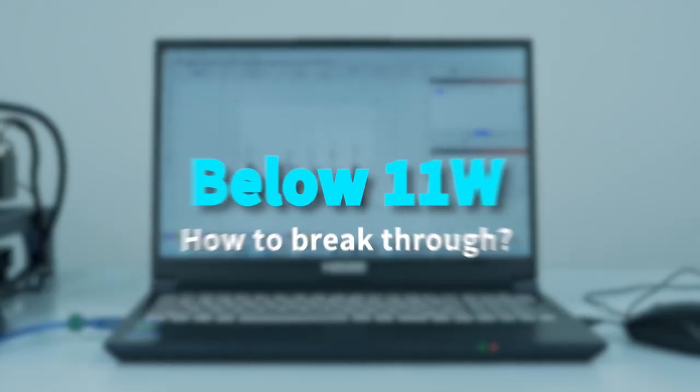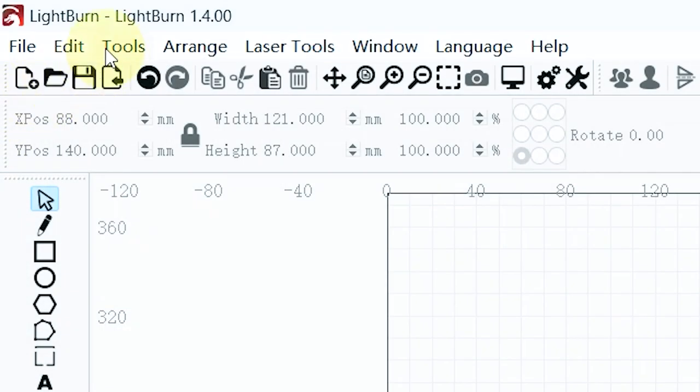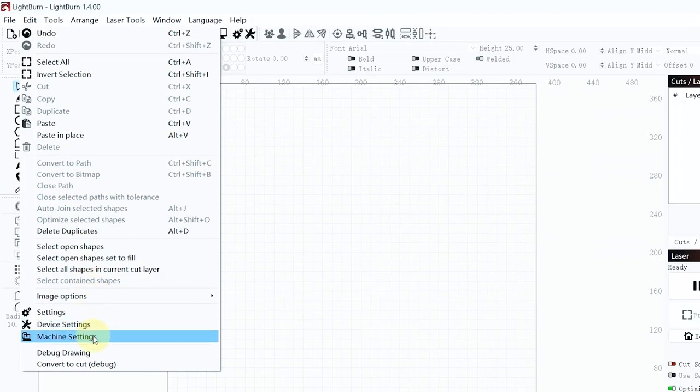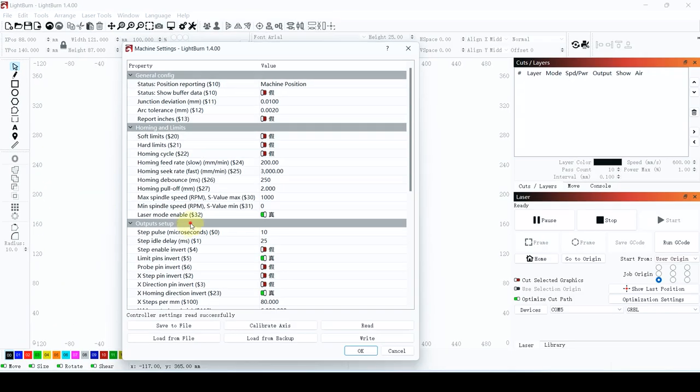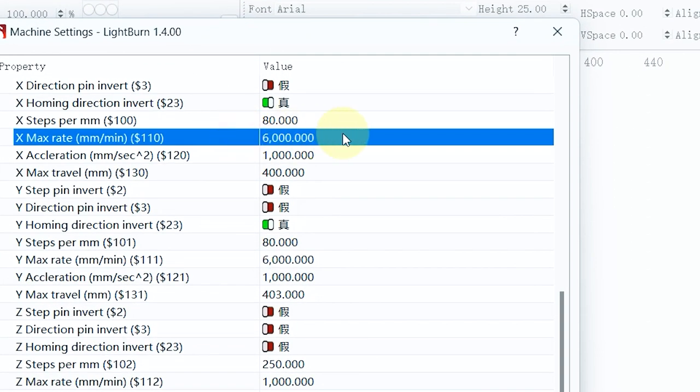Suggested maximum speed and acceleration settings: 11 watt and below. Lasers weighing less than or equal to 11 watts have lighter weight, stronger stability, and can break through higher speeds. It is recommended not to exceed 25,000 millimeters per minute.